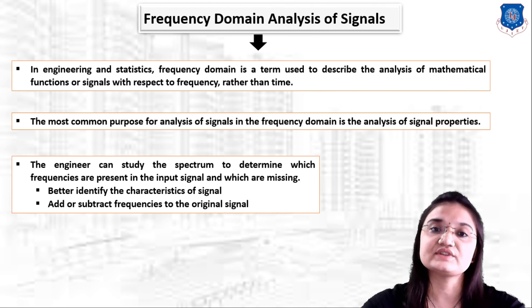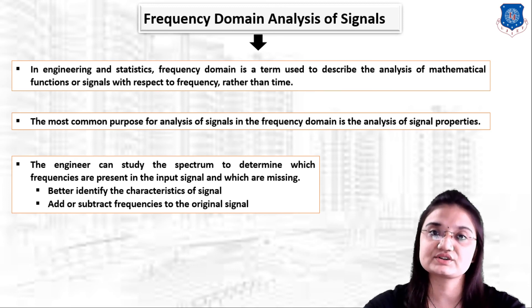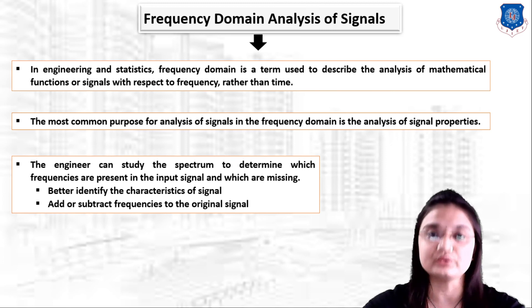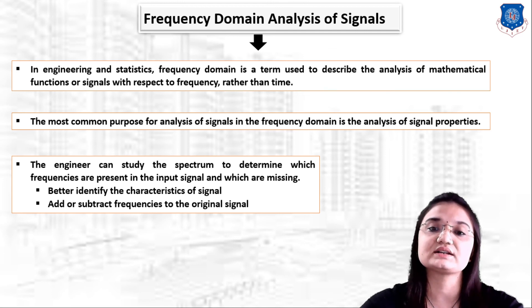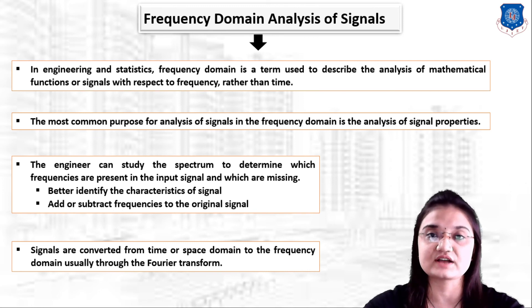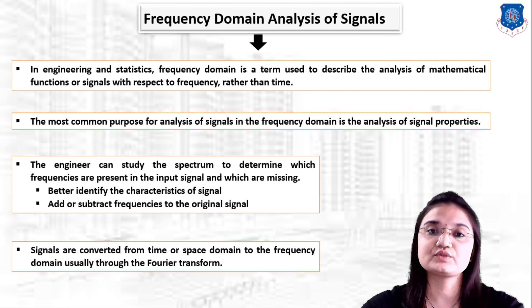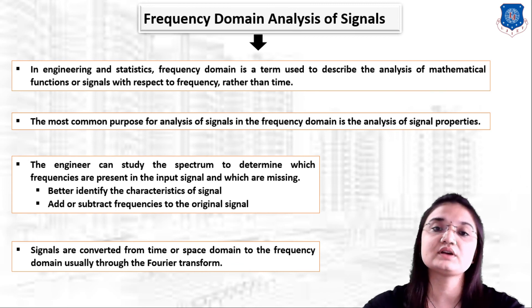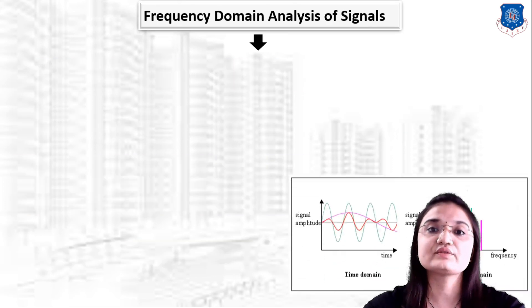With the help of frequency domain analysis you can better identify the characteristics of the signal and add or subtract frequencies to the original signal. Signals are converted from time or space domain to frequency domain usually with the help of Fourier transform, which we have studied in mathematics — with Fourier transform you can easily convert functions which are in the time domain to the frequency domain.